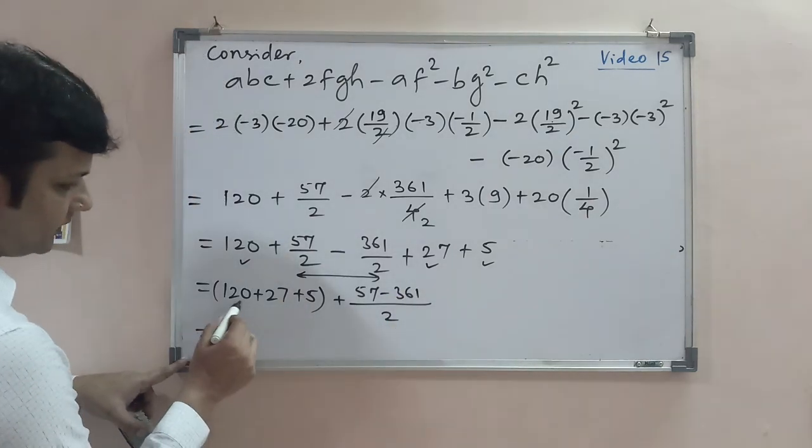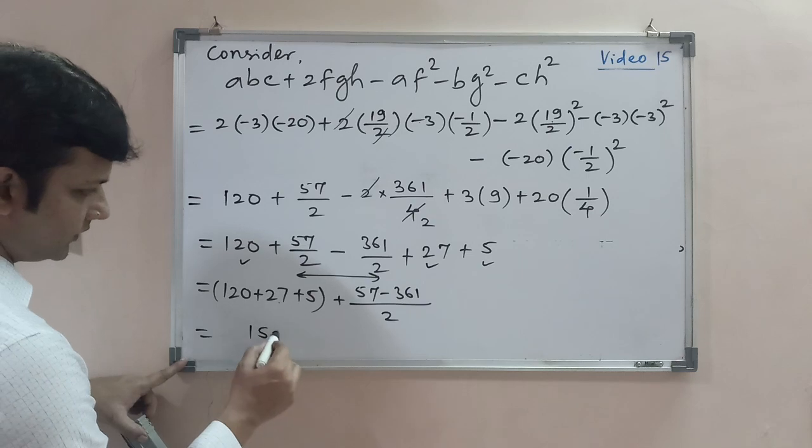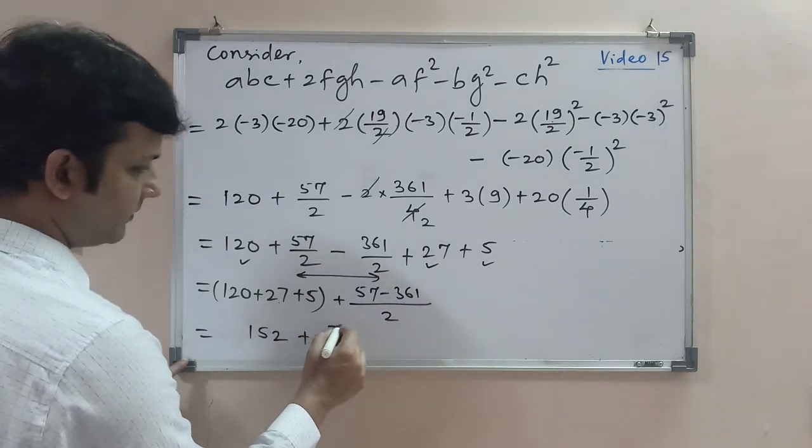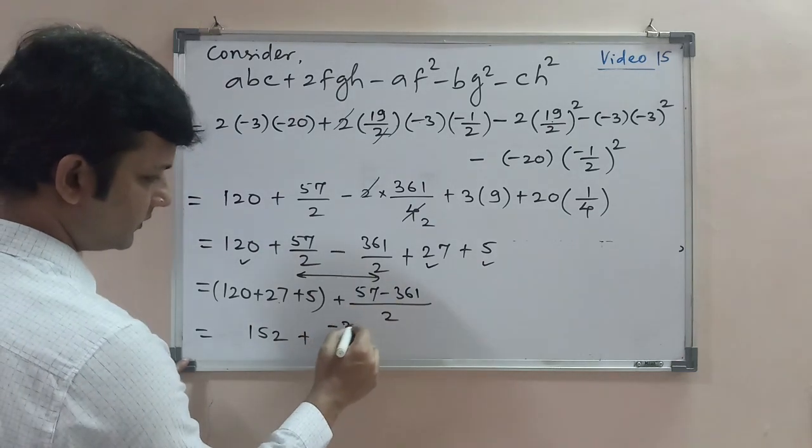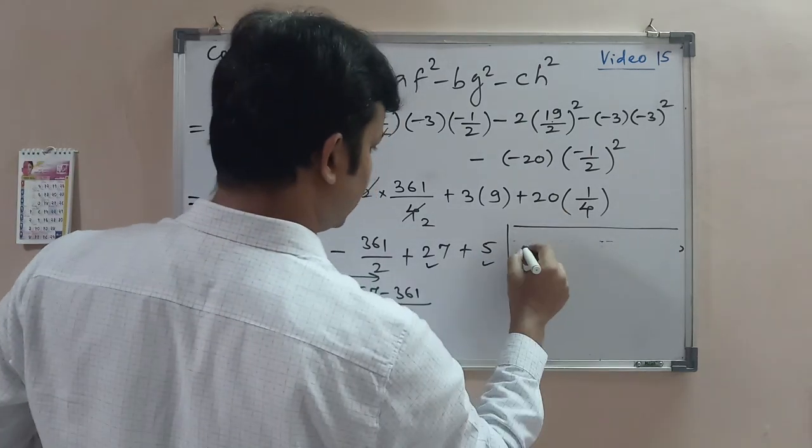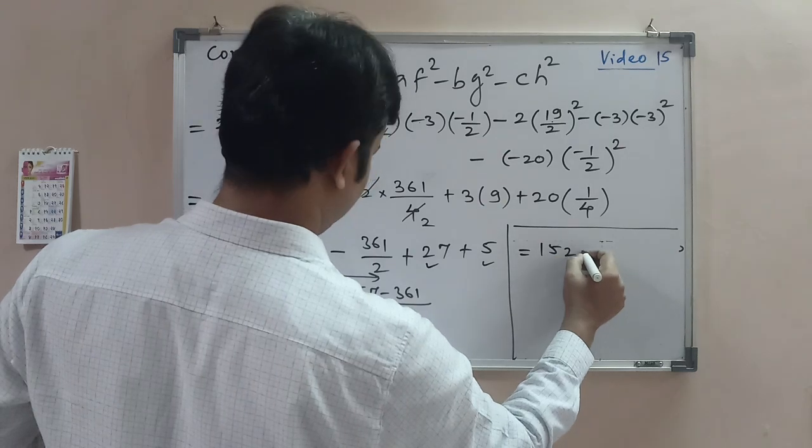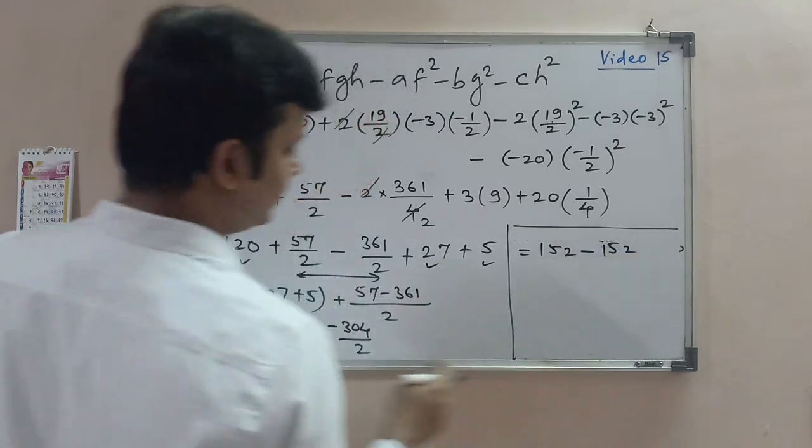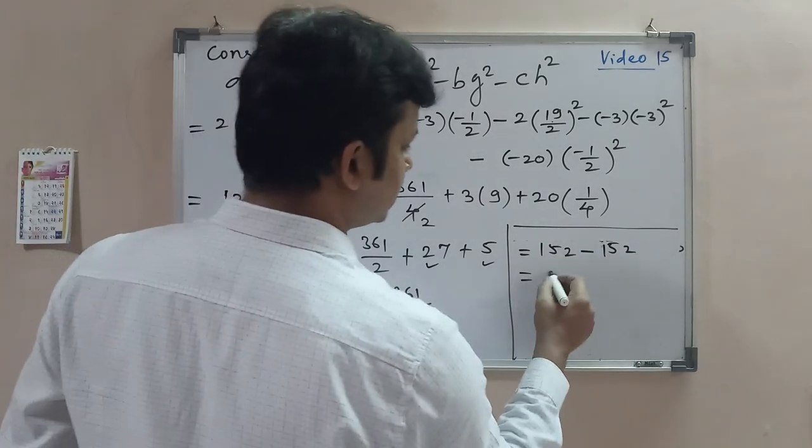So this calculation gives 152, and here minus 304/2 which is -152. If we calculate it: 152 minus 152, which equals 0.